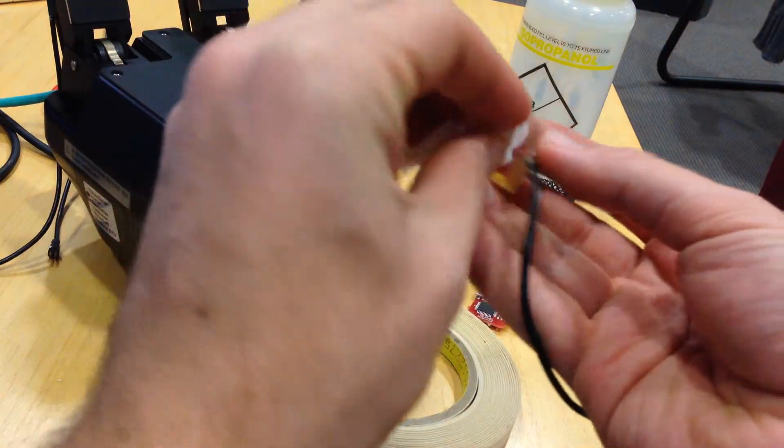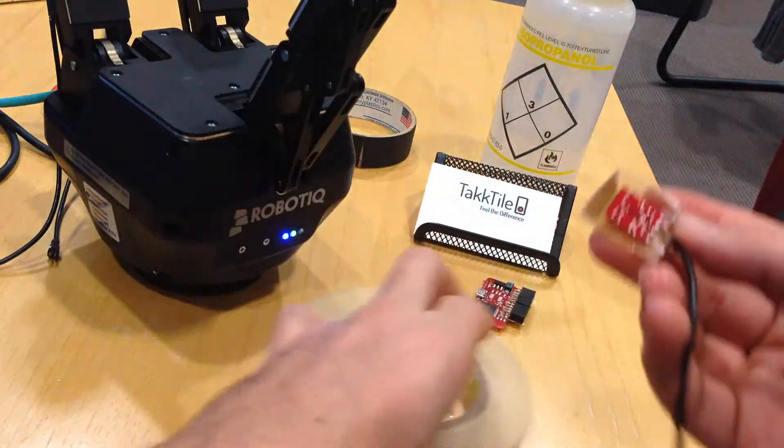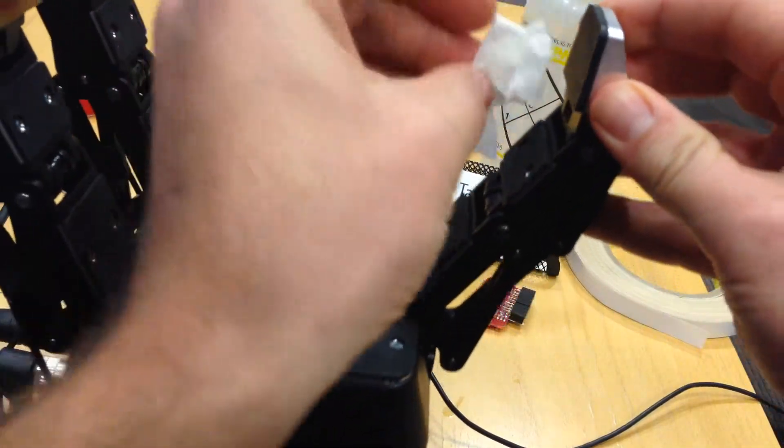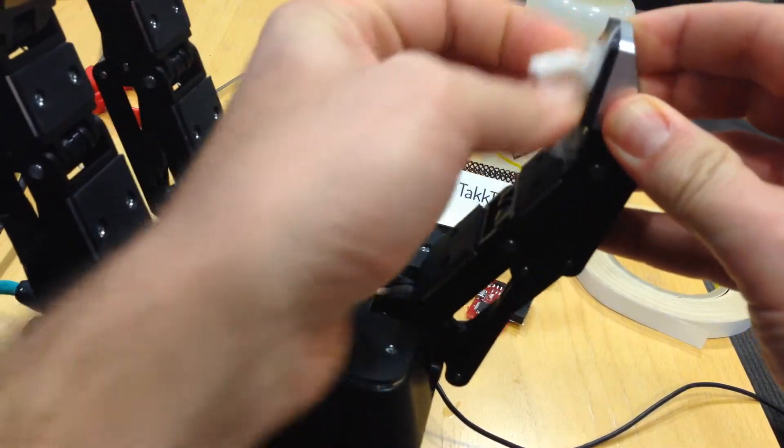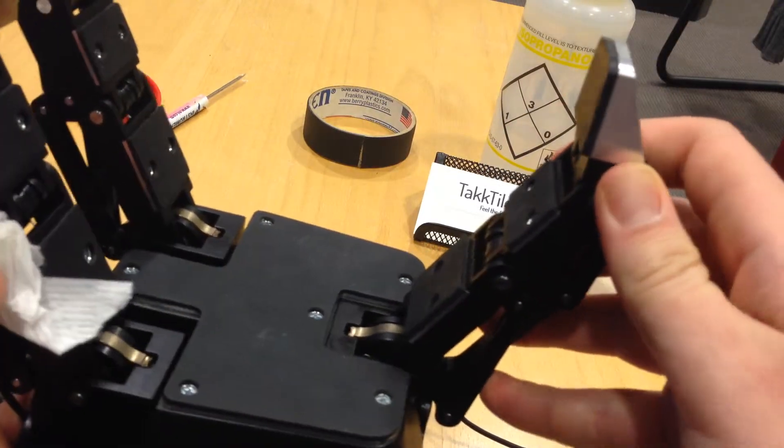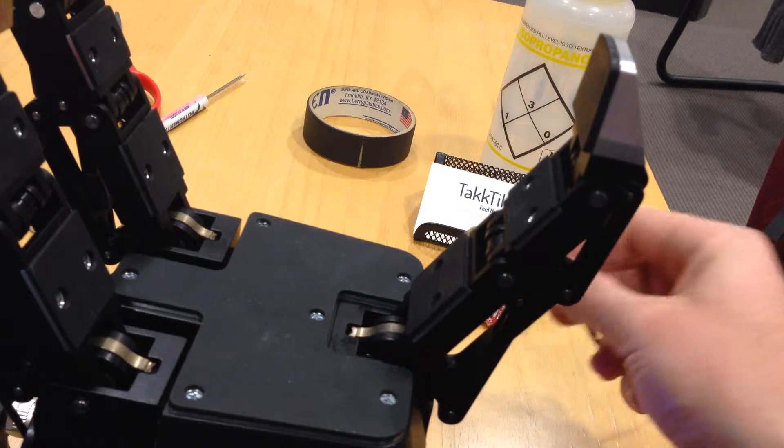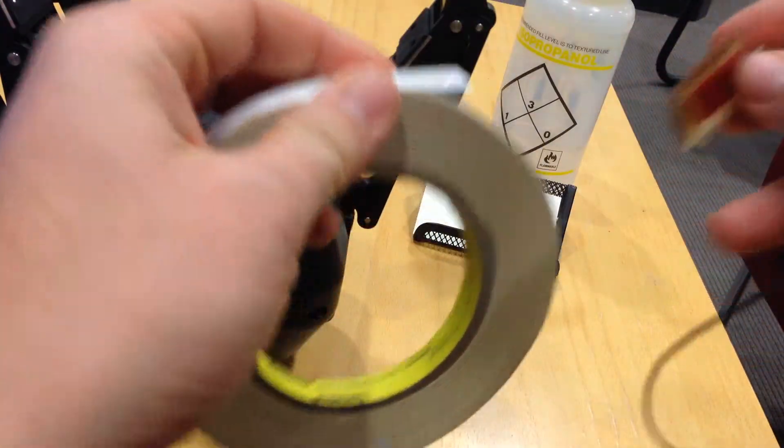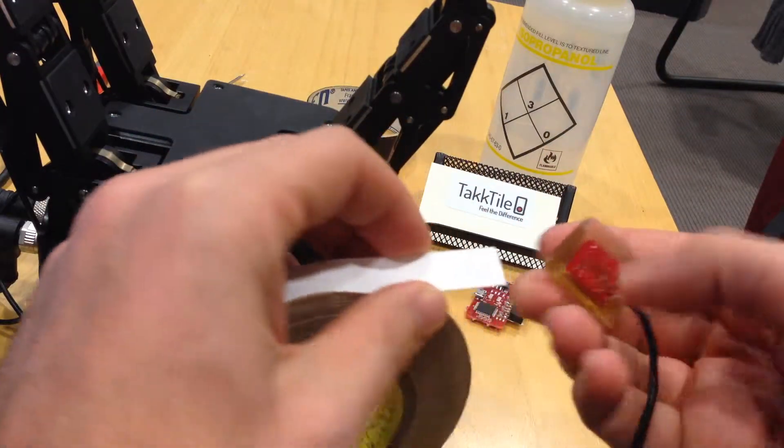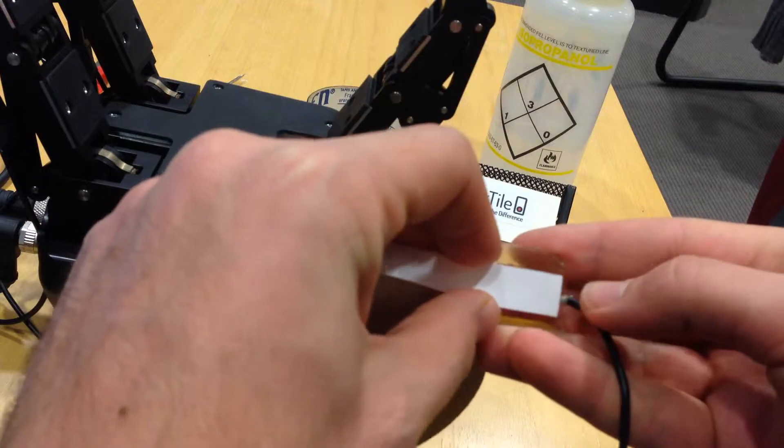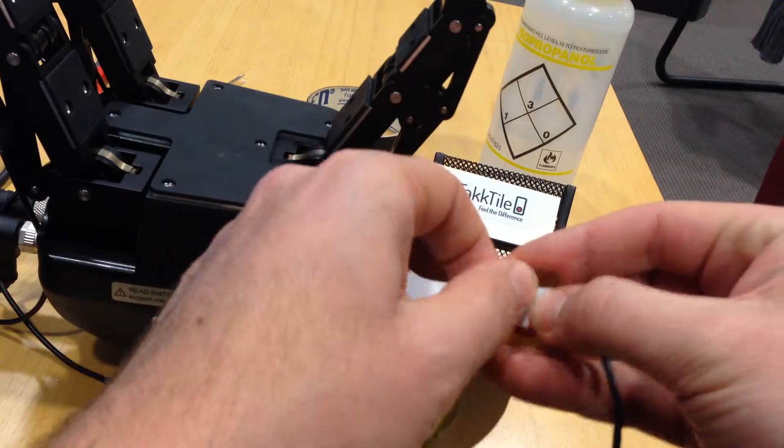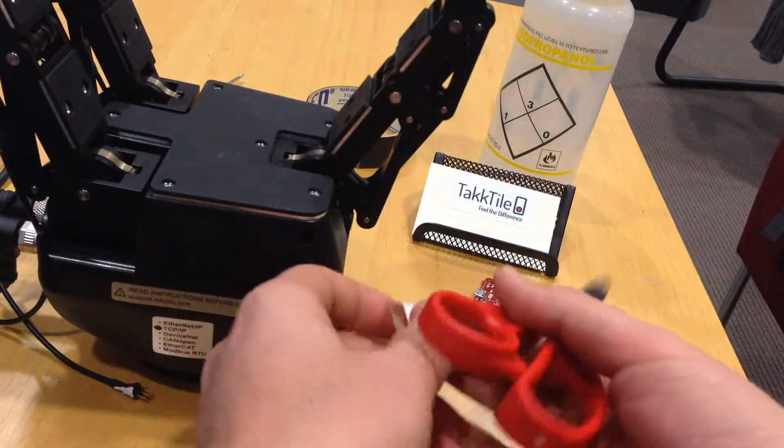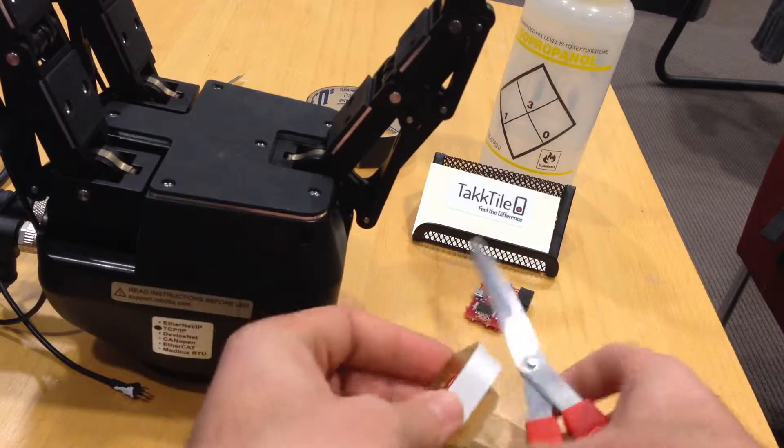Clean the back of the sensor and back of the finger. Next, attach the double-sided tape. This one is not wide; you can use a wider version. Firmly press it against the surface. Now use scissors to cut the excess.